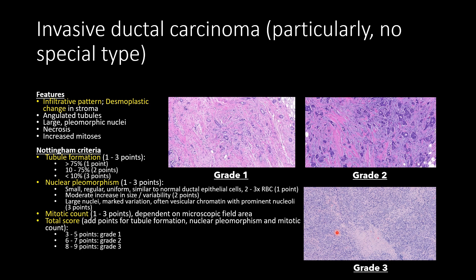For grading invasive ductal carcinoma, we use the Nottingham criteria, based on tubule formation, nuclear pleomorphism, and mitotic count — each ranked one to three points, giving a final score of three to nine. For tubule formation: if greater than 75% of the lesion is still forming tubules, that's one point; if less than 10% is forming tubules — meaning cells are forming sheets — that's three points; somewhere in the middle is two.